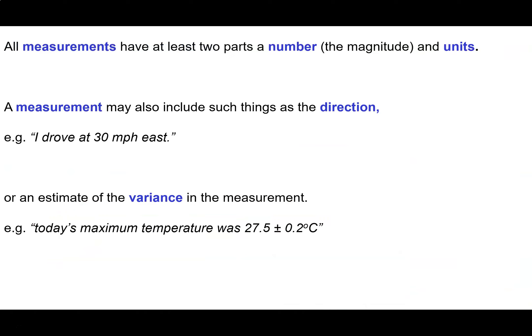All measurements have at least two parts: a number (sometimes called the magnitude, which tells you how big the measurement is) and units (a label that tells you what is being measured). It's really important that units are made very clear. There have been many serious errors — including accidents where people die — because measurements were mislabeled with incorrect units.